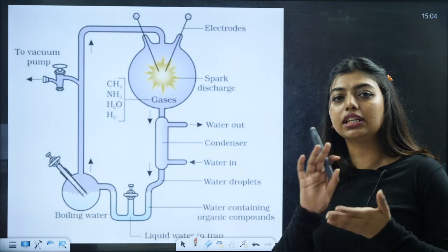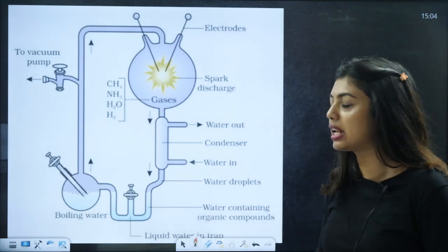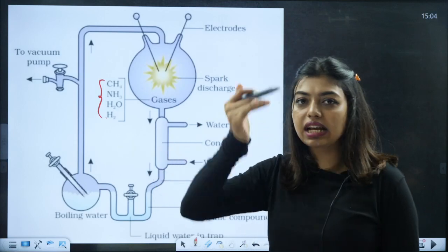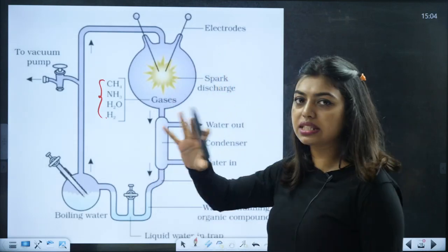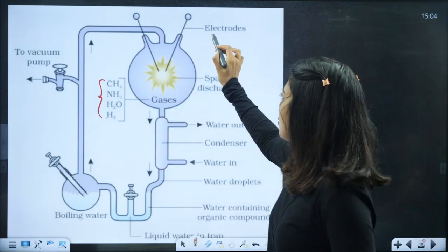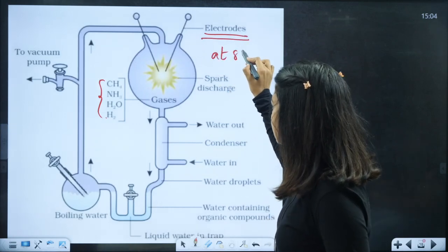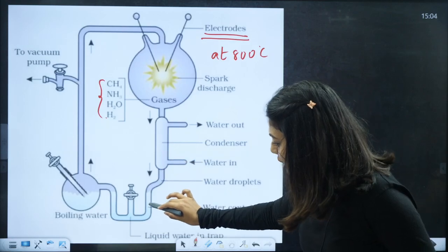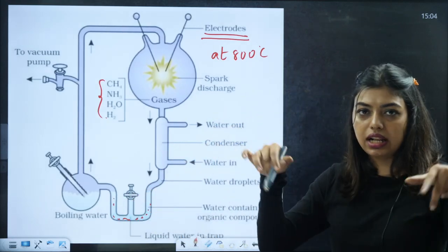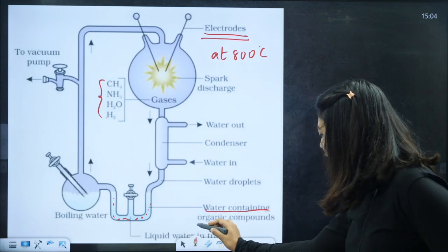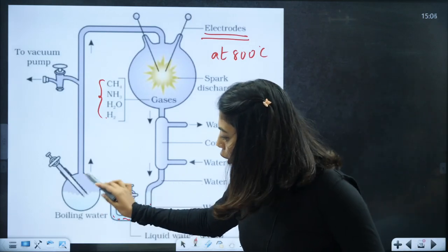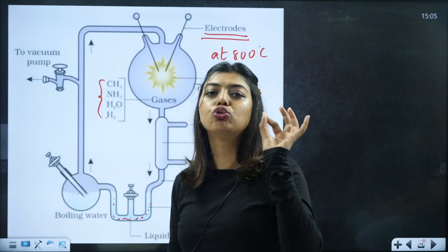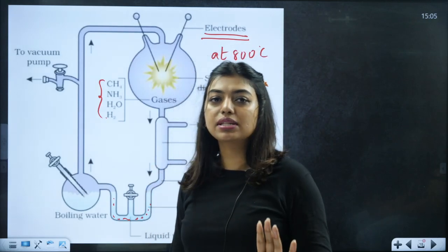Coming to the most important question - Miller and Urey's experiment. This diagram comes many times. You have to draw and learn this diagram. The setup is simple - early atmosphere gases CH4, NH3, H2O, H2 are in one flask. Spark discharge is done with electrodes at 800 degrees Celsius. The gases condense with help of condenser and accumulate in U-shaped flask - water containing organic compounds. Boiling water supplies continuous water vapor to the entire gas mixture.